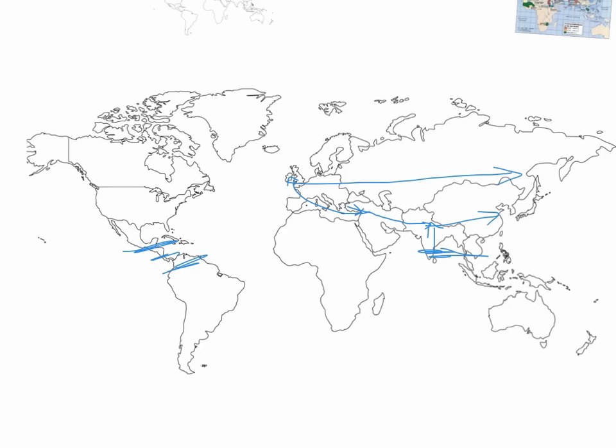Coming back to the Americas, the countries with the largest east-west extent are the United States and Canada. Not surprisingly, these are the wealthiest countries in the Americas.